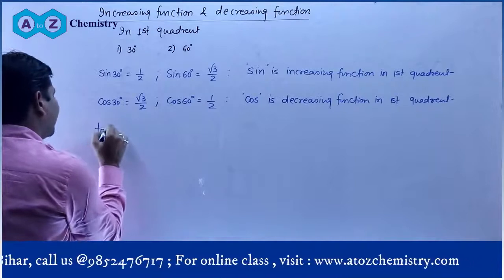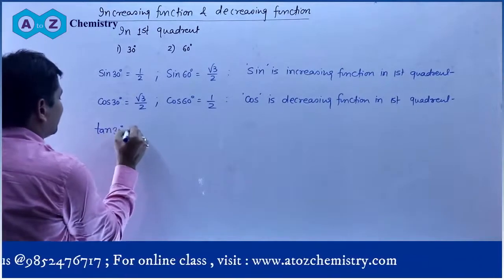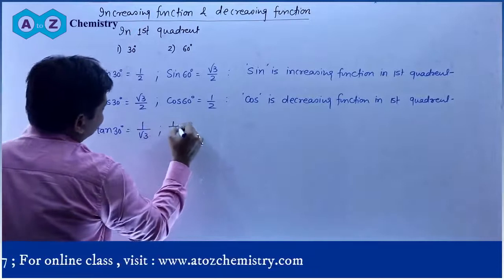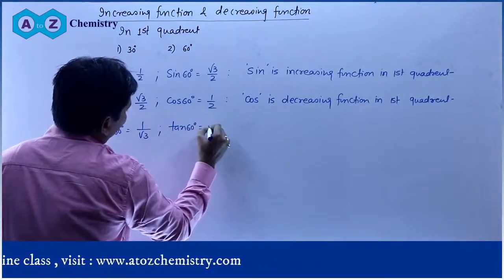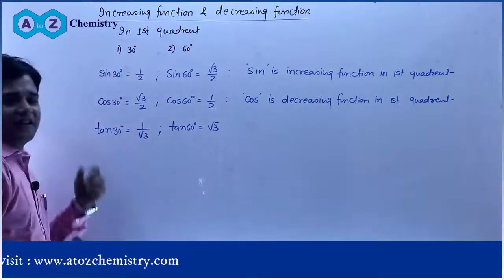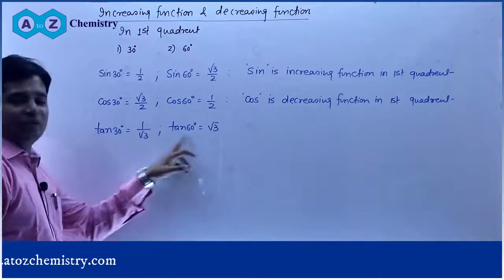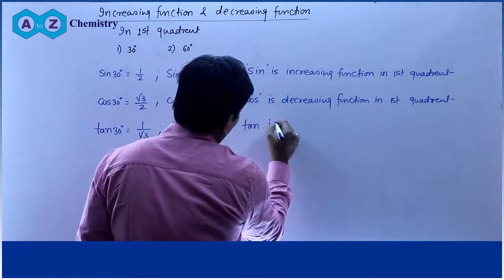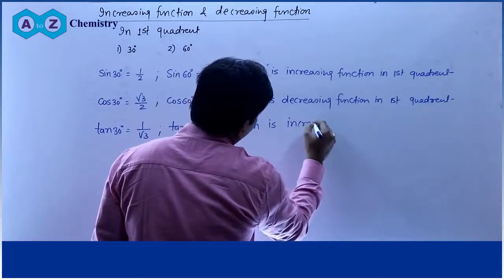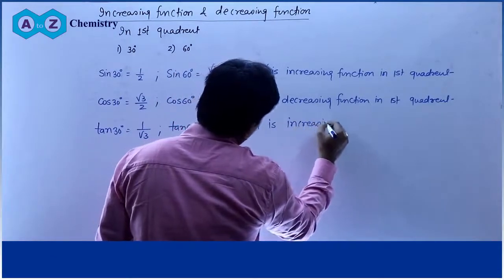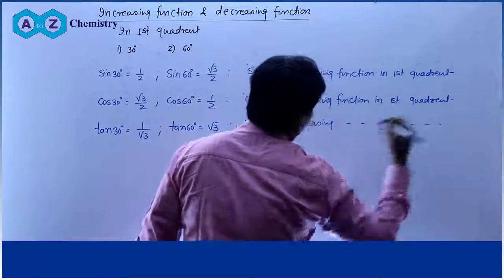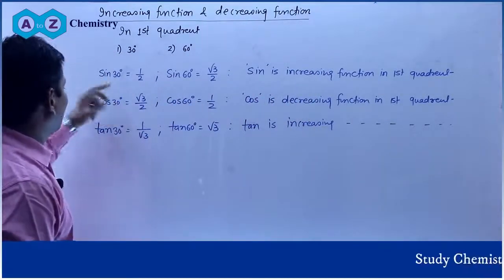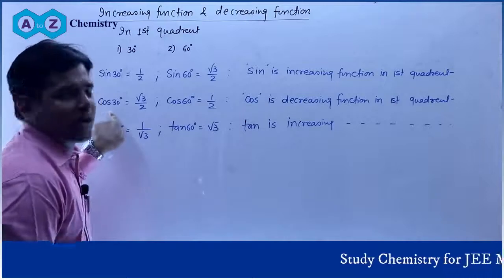Agar aap tan 30° ki baat karo toh tan 30° = 1/√3, aur tan 60° = √3. Angle badhaya 30° se 60°, toh value bhi badha 1/√3 se √3 ho gaya. Iska matlab tan is an increasing function in the first quadrant.